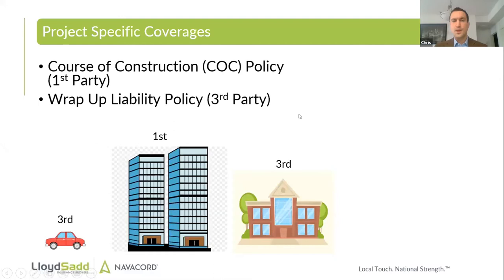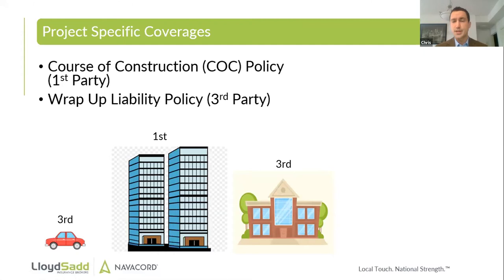We'll start out by talking about the course of construction and the wrap-up liability policy. We want to understand how these two policies function and what they are for. A course of construction policy is a first-party coverage — it covers the project that's being worked on, represented by the two big buildings in my graphics here. The wrap-up liability policy is the third-party coverage — it covers damage and bodily injury to neighboring buildings, vehicles, and people. A lot of times those two get confused, so I want to be very clear on what each covers.